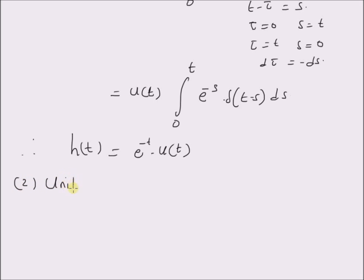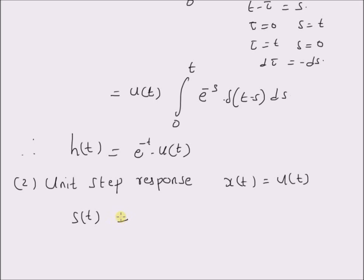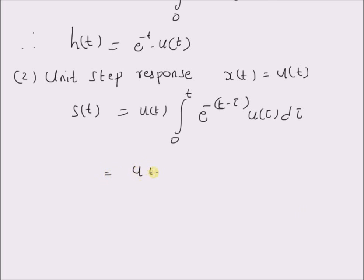Note that this is a decaying exponential. Now let us look at the unit step response. The unit step response is given when x of t is equal to the unit step u of t. So the unit step response, denoted by s of t, is equal to u of t multiplied by the integral from 0 to t of e power minus (t minus tau) u of tau d tau.